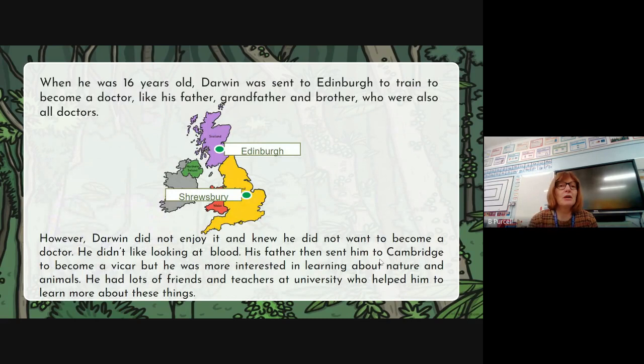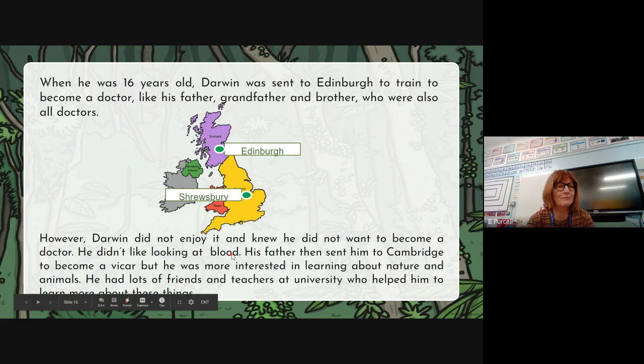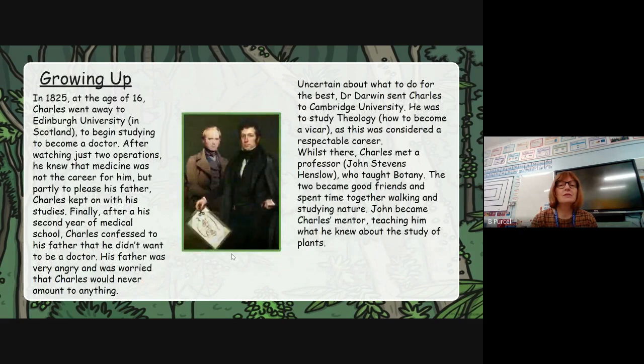So again, this was my previous paragraph. When he was 16 years old, my last week's work said he was sent to Edinburgh to train to become a doctor like his father, grandfather and brother. However, Darwin did not enjoy it and knew he did not want to become a doctor. He didn't like looking at blood. His father then sent him to Cambridge to become a vicar, but he was more interested in learning about nature and animals. He had lots of friends and teachers at university that helped him learn more about these things — good basic detail. So I decided to look at how I could improve that, and straight away I've got a subheading and a significant date.